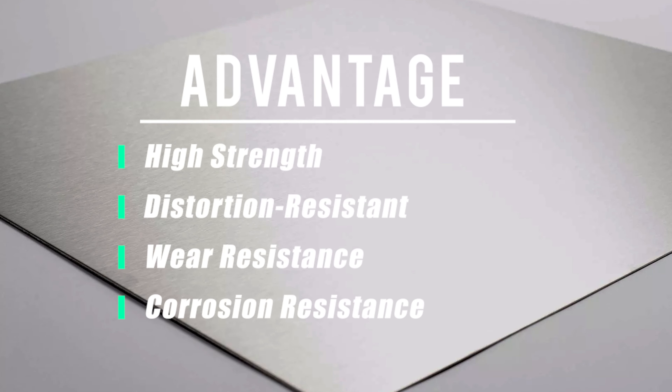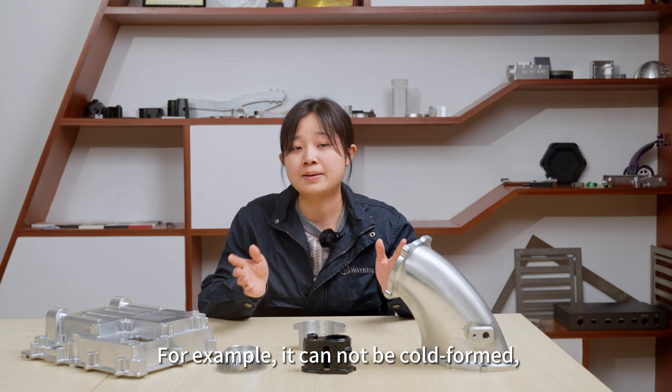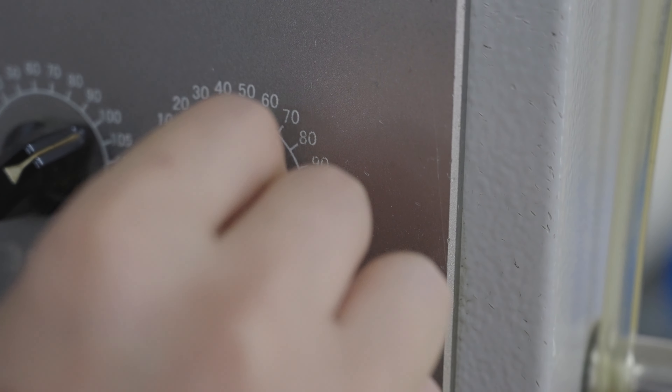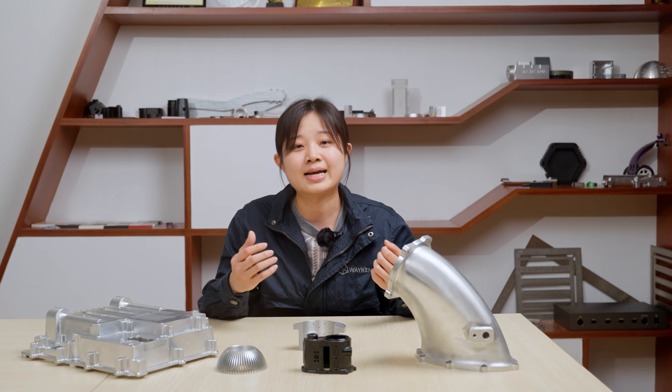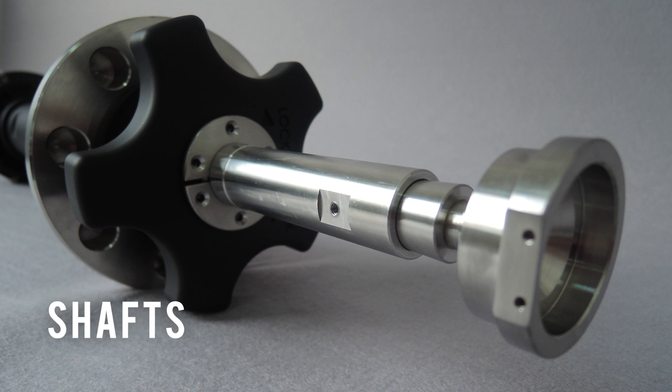Stainless steel alloys are strong and resistant to distortion, wear, and corrosion. 303 stainless steel offers improved machinability, but this material has a number of limitations. For example, it cannot undergo heat treating or welding, and special care must be taken with speed and sharpness of cutting tools during CNC machining.